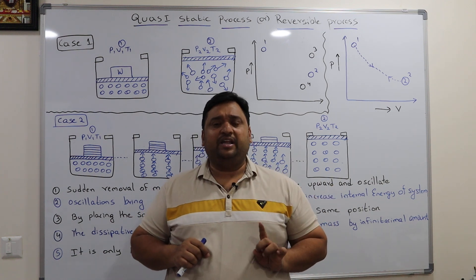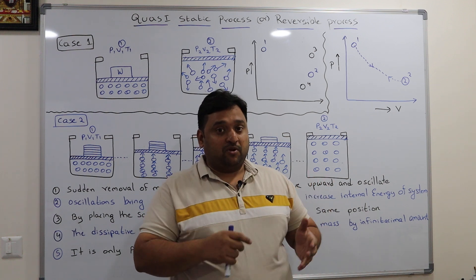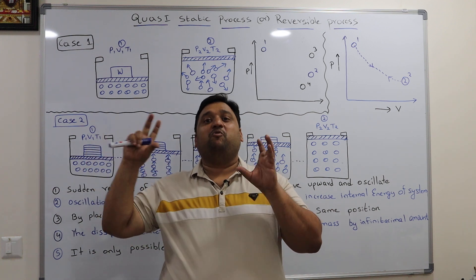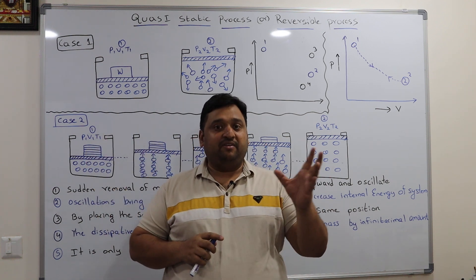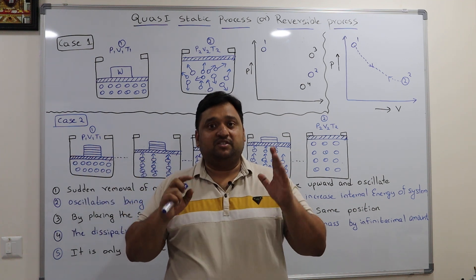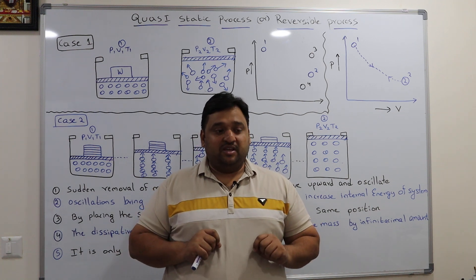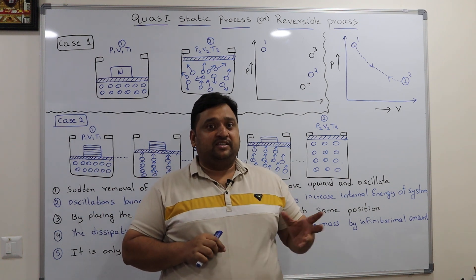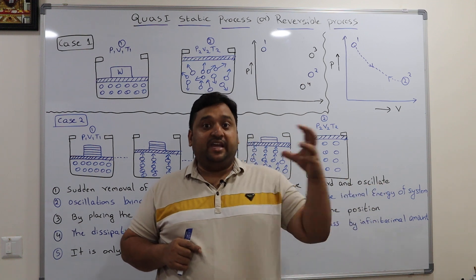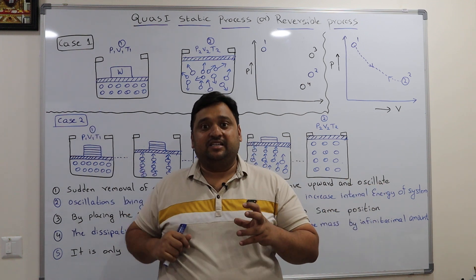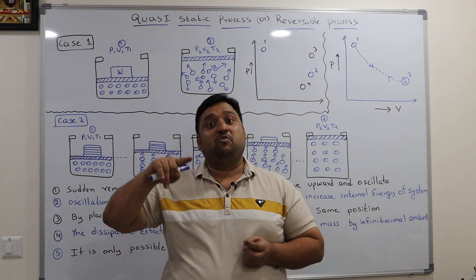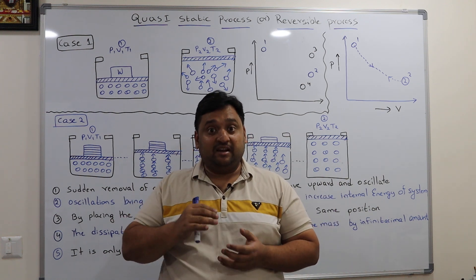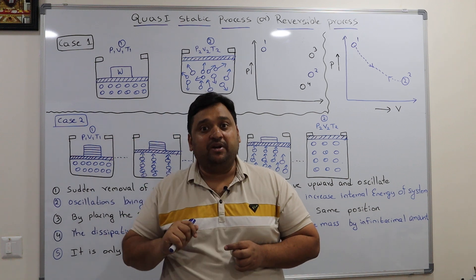In very simple terms, one key indicator of a reversible process is: for a given input we get the maximum possible output. If it is an irreversible process, for a given input we may not get the maximum possible output. For example, in IC engines — for a given heat input, how much work can we expect? If it is a reversible process, for a given heat input to the piston and cylinder, maximum work can be extracted.